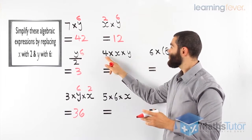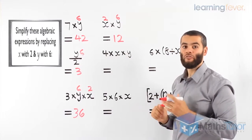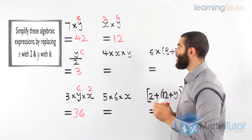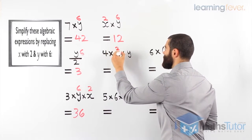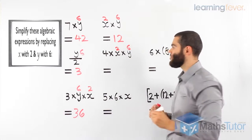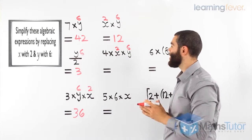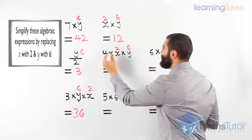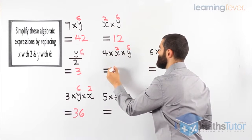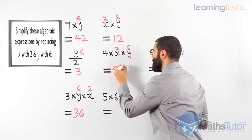Here, 4 times x times y. 4 times x times y. We know x is 2 and y is 6. That's what the question is saying, that x equals 2 and y equals 6. Now we can solve it. 4 times 2 is 8. 8 times 6 is 48.